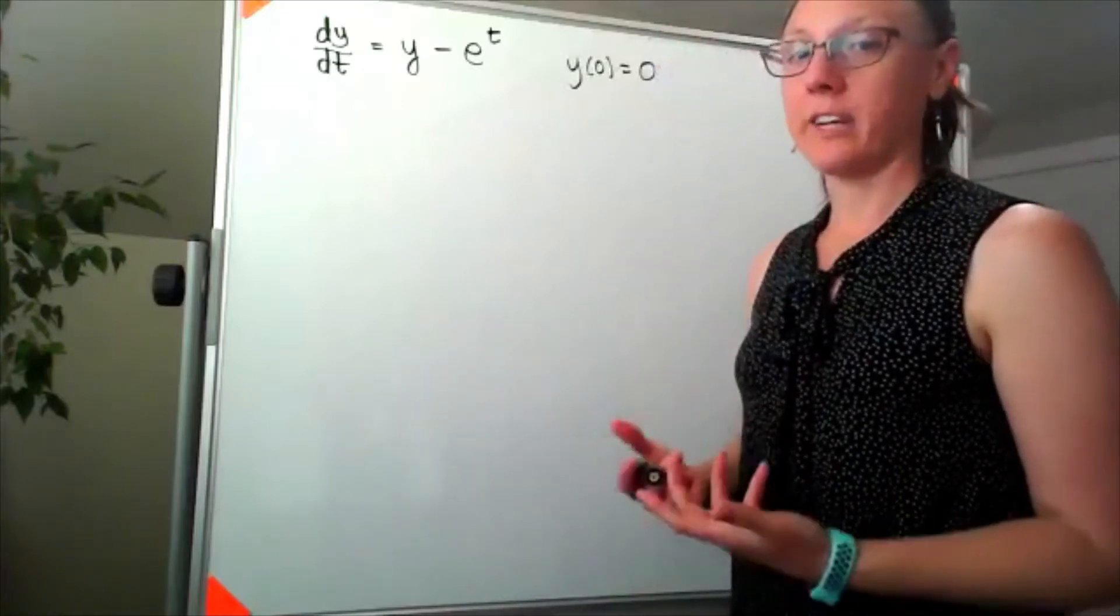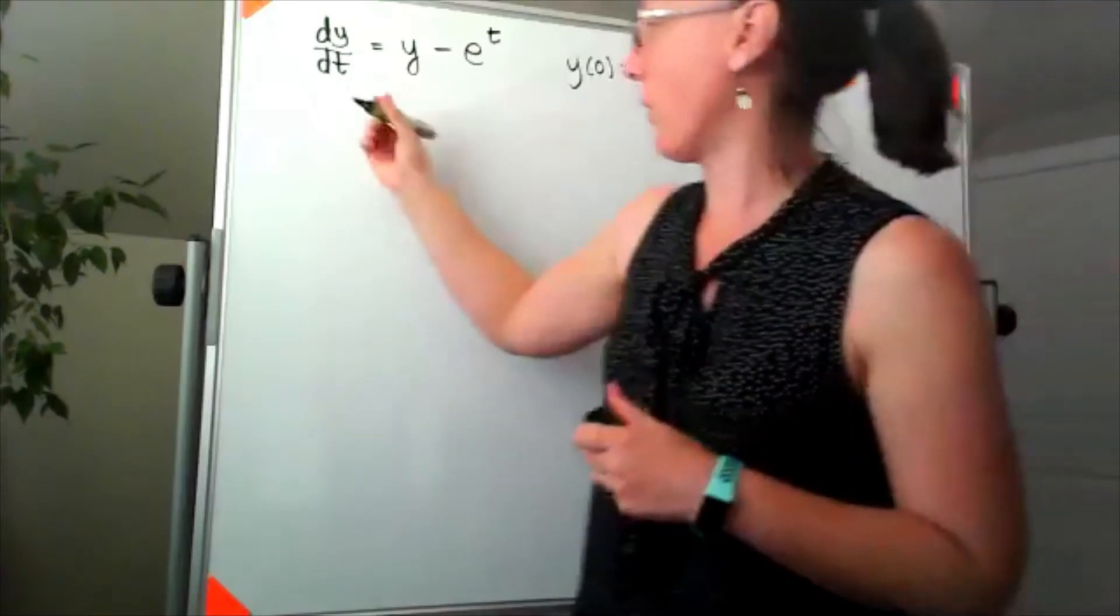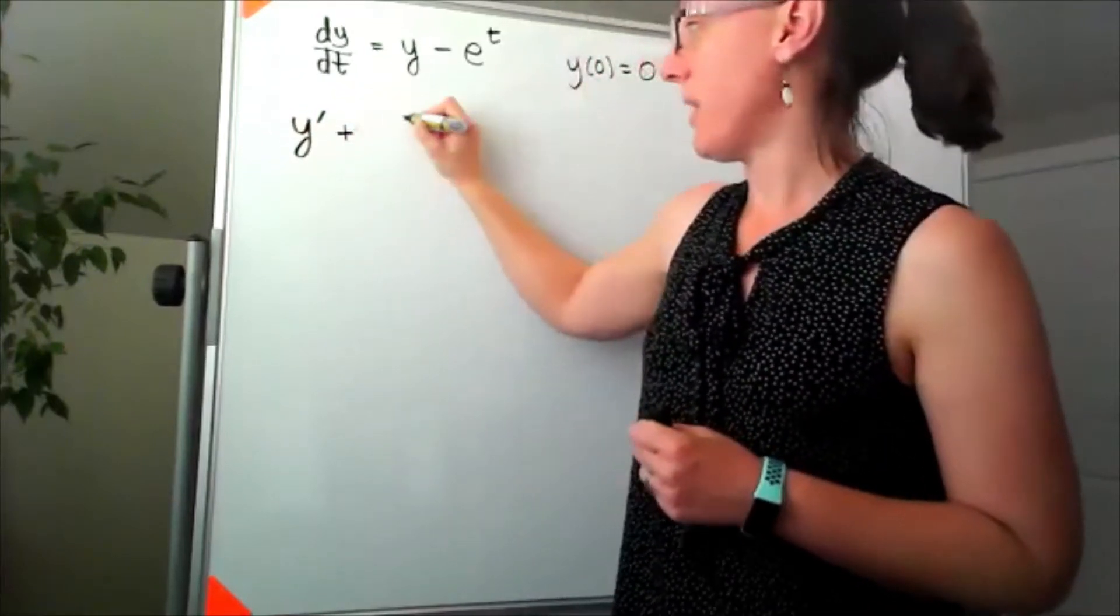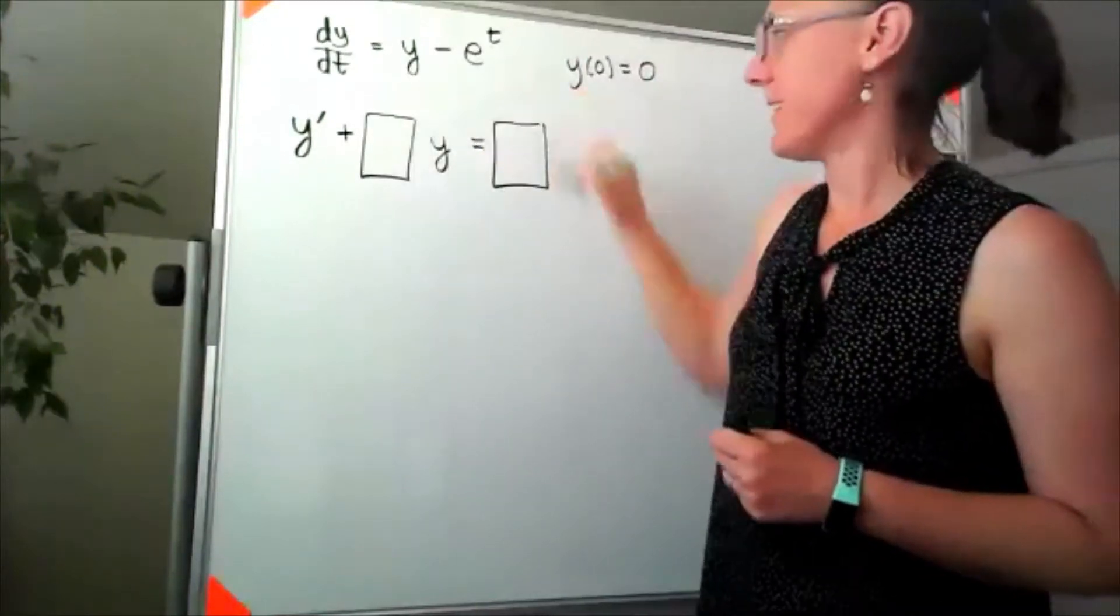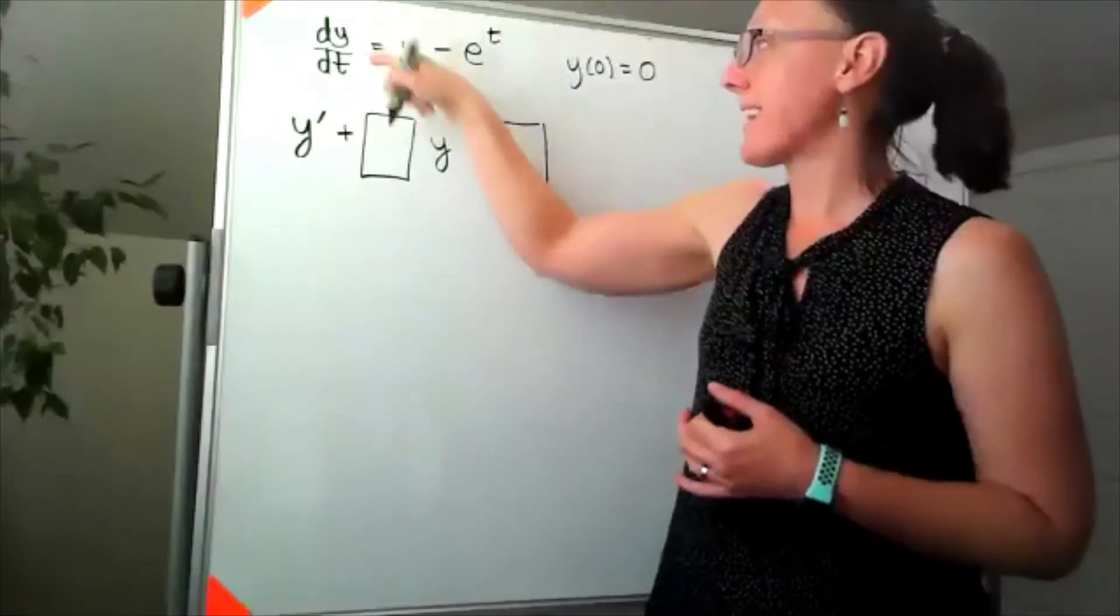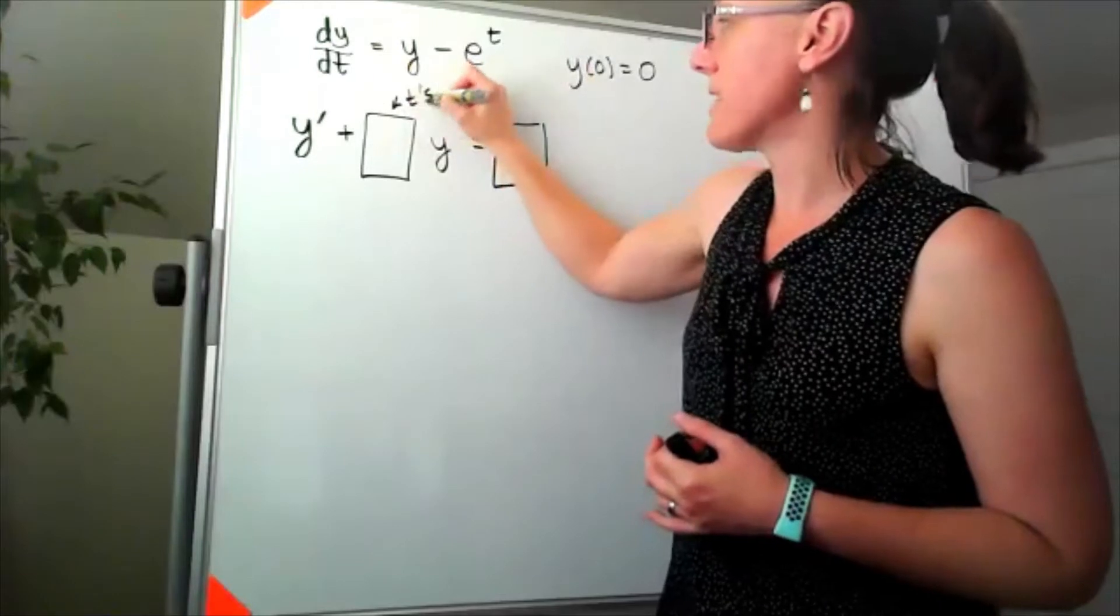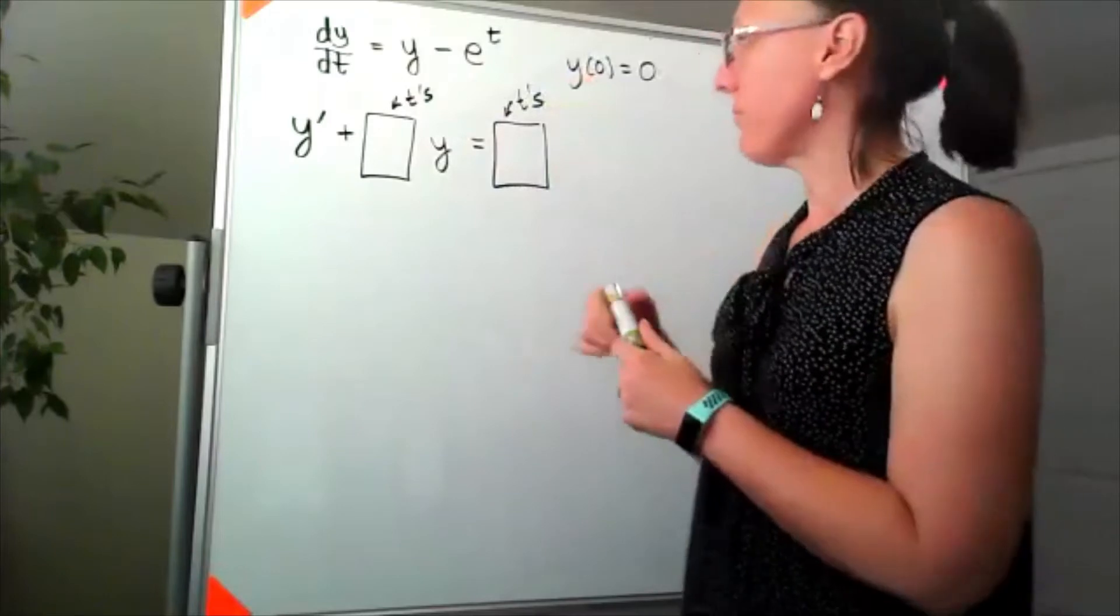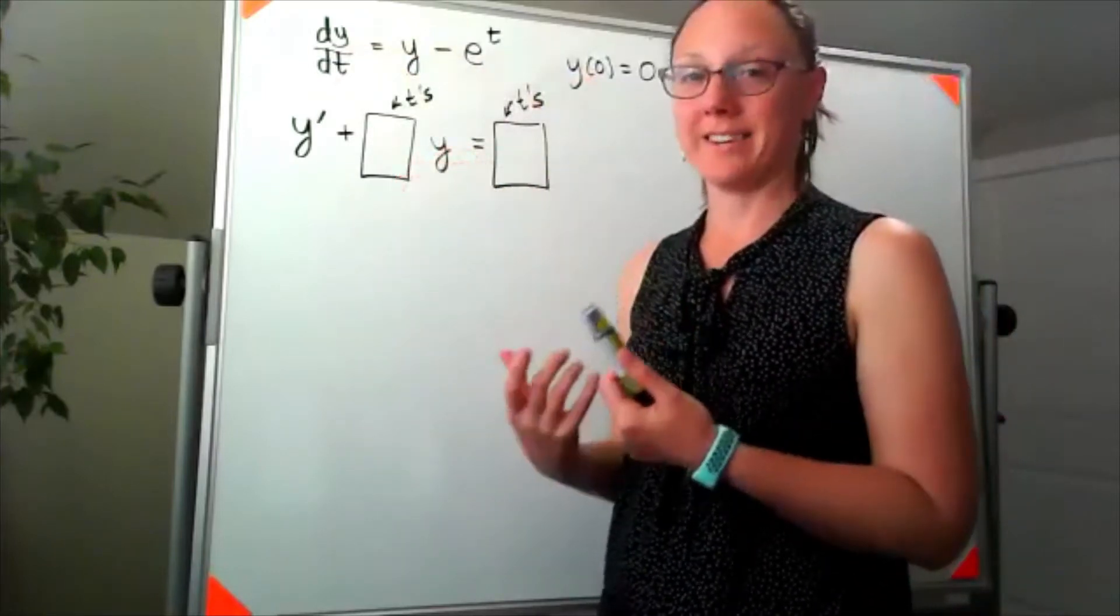In order to be first order linear, we have to be able to write this in exactly the form y prime plus something times y equals something. And whatever goes in those boxes, in this case because it's with respect to t, whatever goes in these boxes can have t's but no y's.